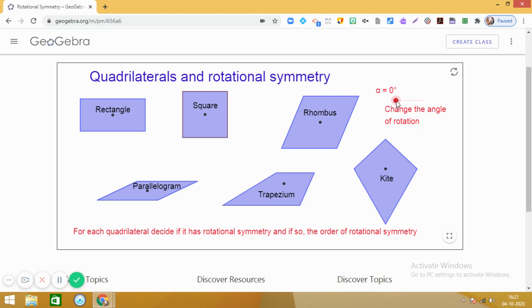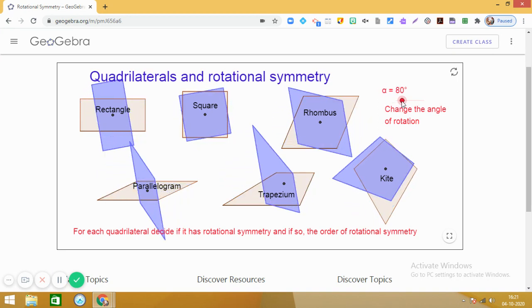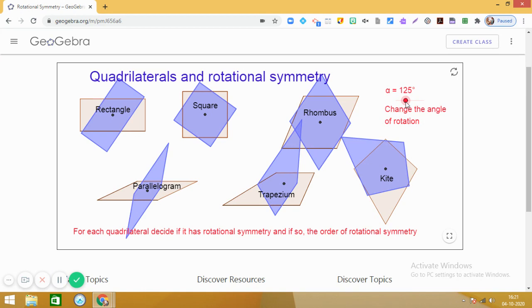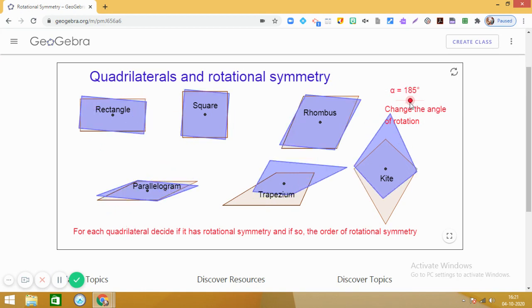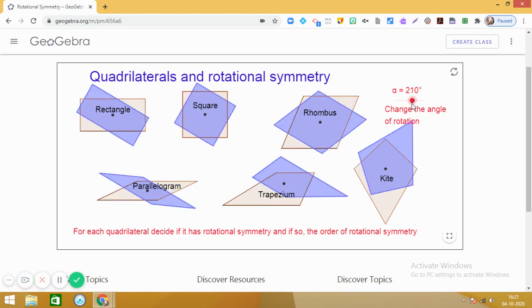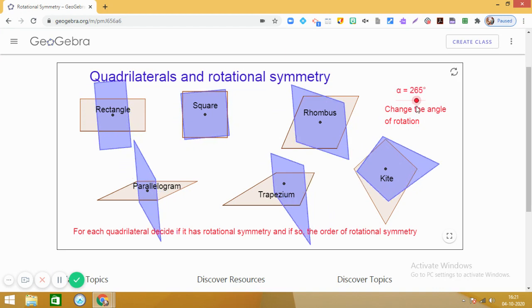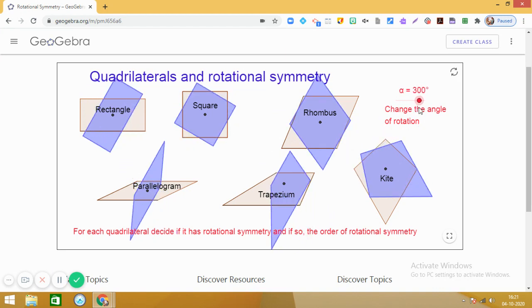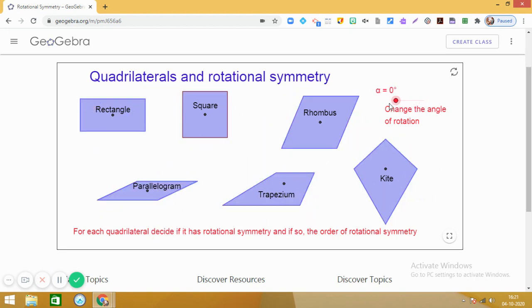Just closely observe all the shapes. I am rotating. And we see that when we are rotating the object, the size and shape do not change. Now, the fixed point about which the object is rotating is called the center of rotation. So, you can see we have marked the center of rotations in all these quadrilaterals.